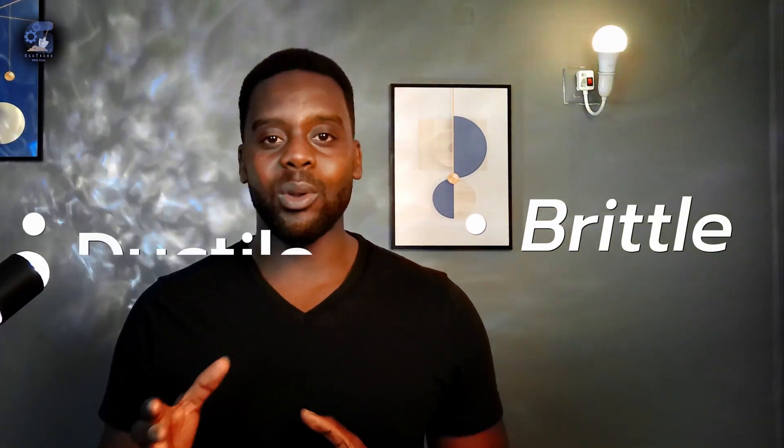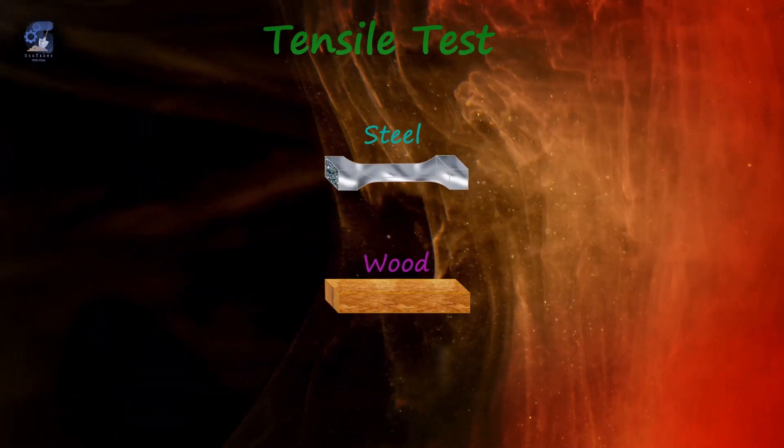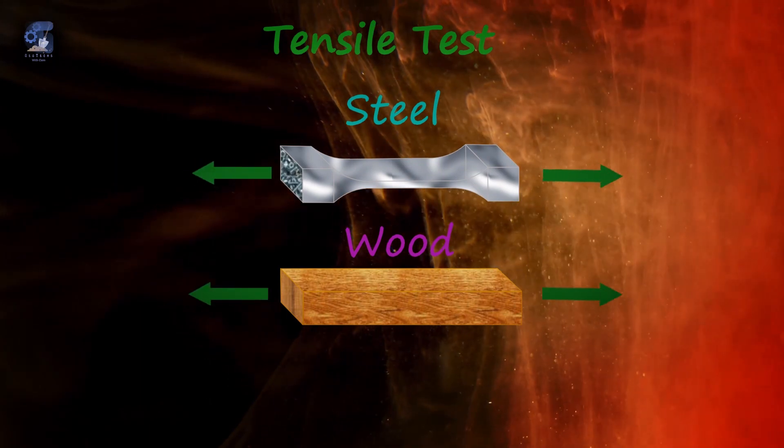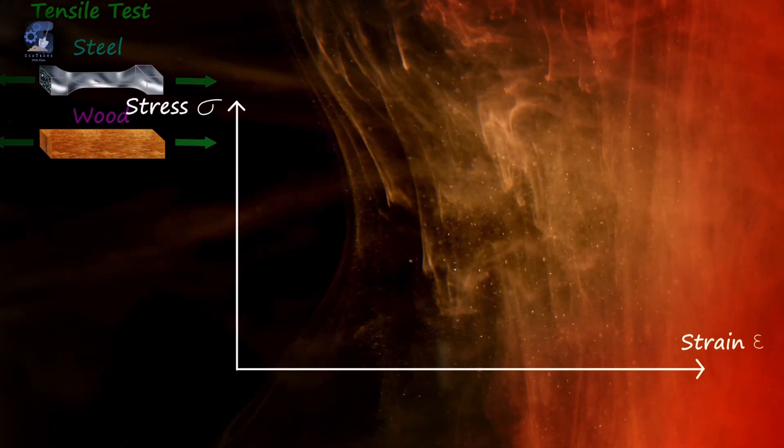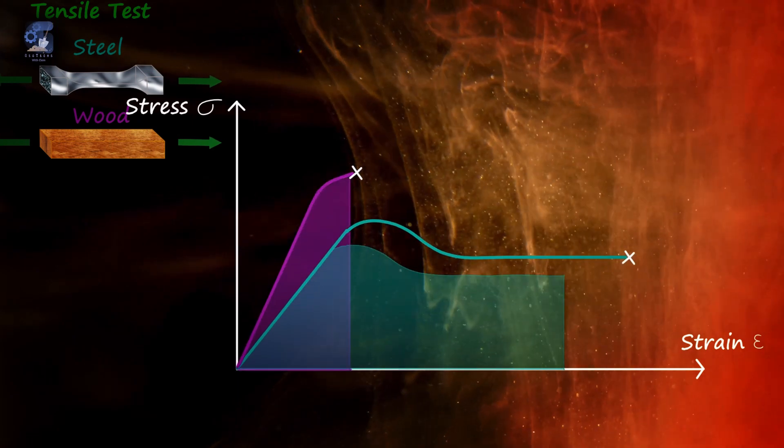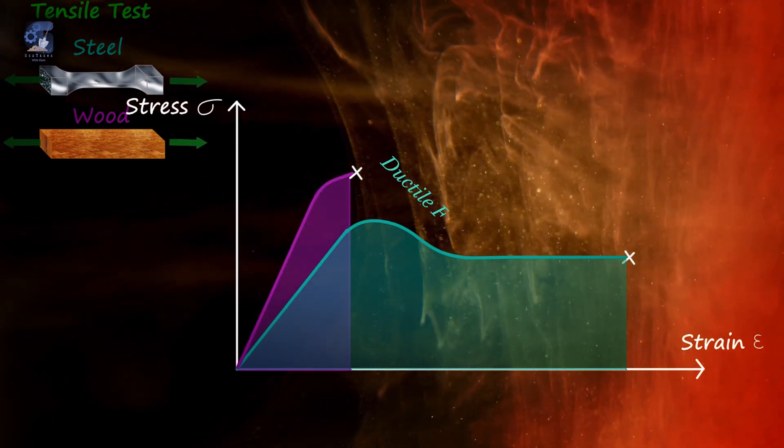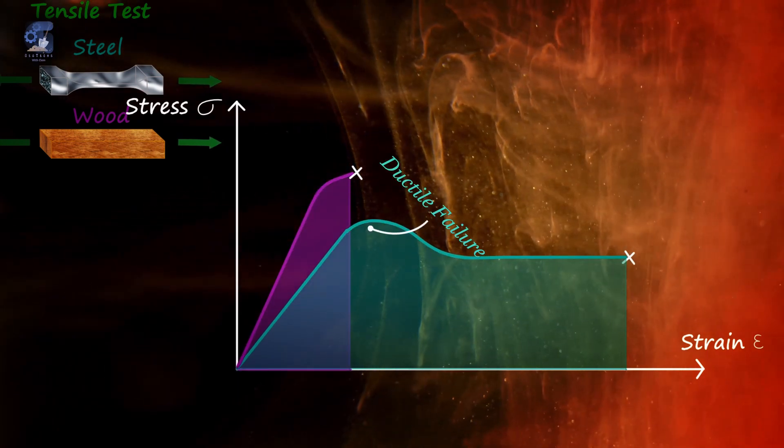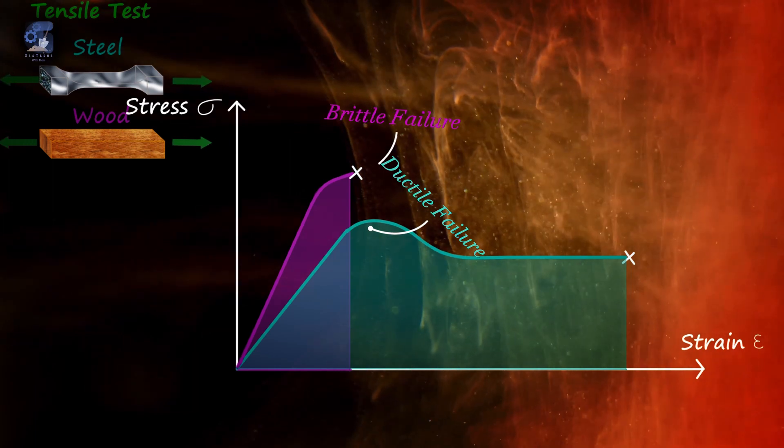For these materials, failure can occur in two ways, either brittle or ductile failure. In a straightforward case of uni-axial stress, the magnitude of failure can be measured through a tensile test and failure occurs when the normal stress reaches yield stress for ductile materials and ultimate stress for brittle materials.